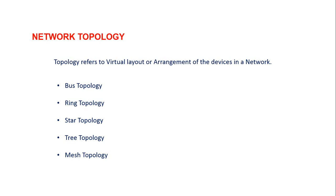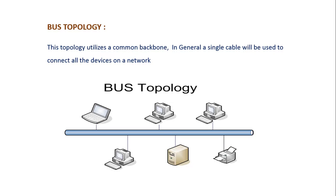Network topologies. Topology refers to the virtual layout or arrangement of devices in the network. In order to establish a network, there are five basic topologies: bus topology, ring topology, star topology, tree topology, and mesh topology.